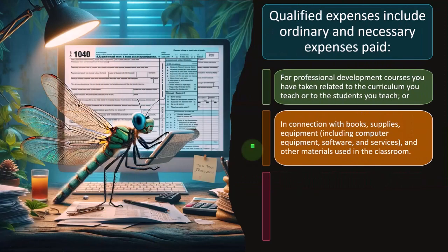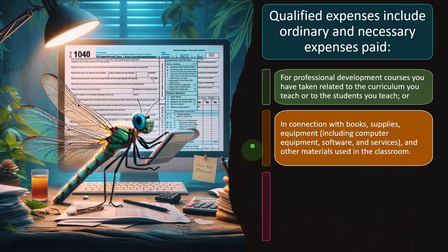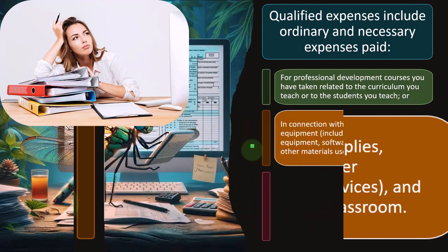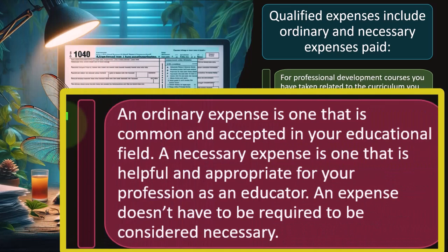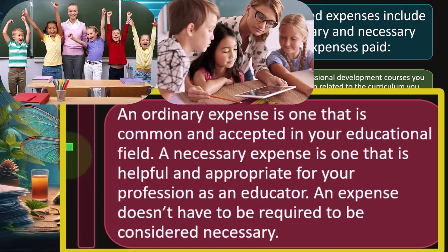What types of expenses are ordinary and necessary? In this case, although you don't have a Schedule C business but rather are a teacher, they're allowing you to take similar kinds of deductions. In connection with books, equipment including computer equipment, software and services, and other materials used in the classroom — an ordinary expense is one that is common and acceptable in your educational field. A necessary expense is one that is helpful and appropriate for your profession as an educator. An expense doesn't have to be required to be considered necessary.